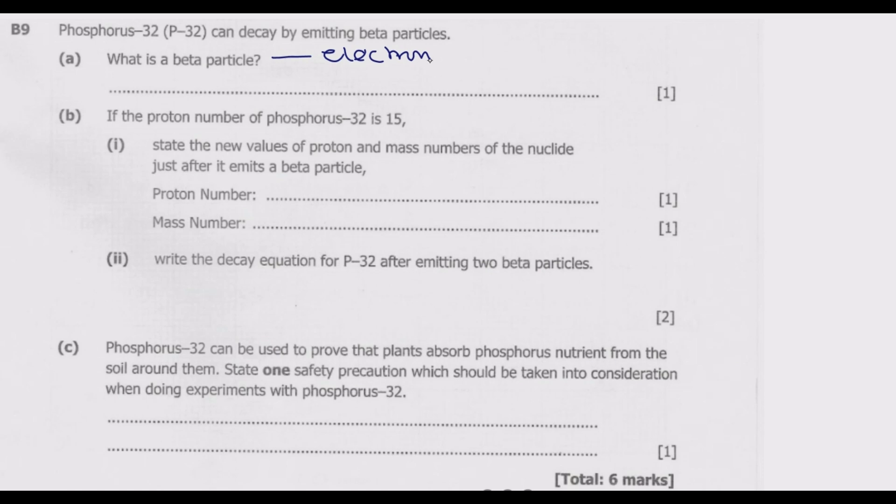To get this one mark, how can we define what is a beta particle? A beta particle is a high speed electron that is ejected from the nucleus by some radionuclides doing beta decay.